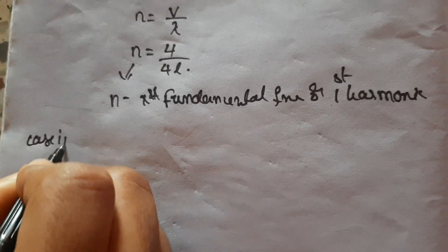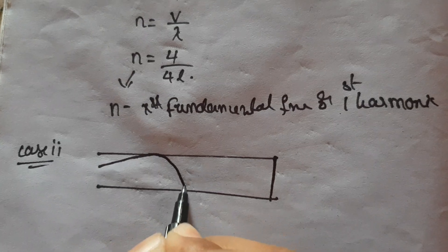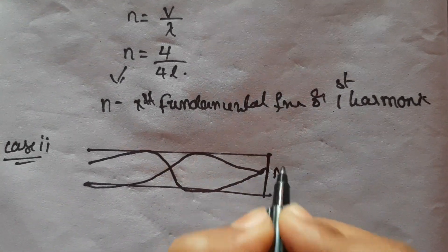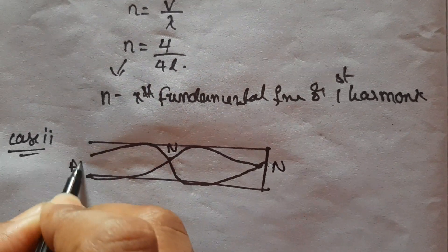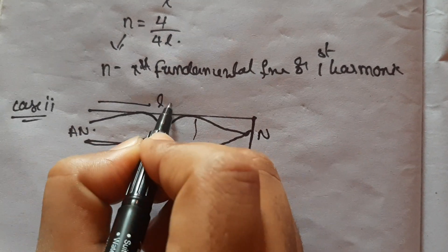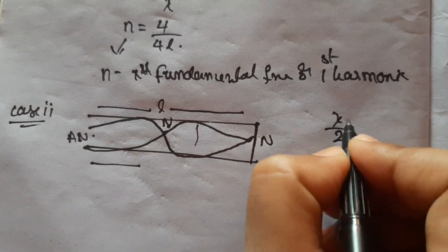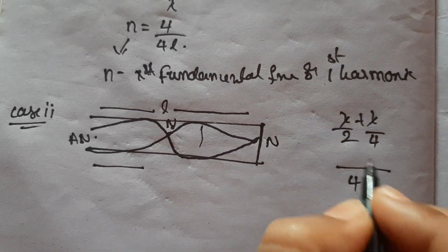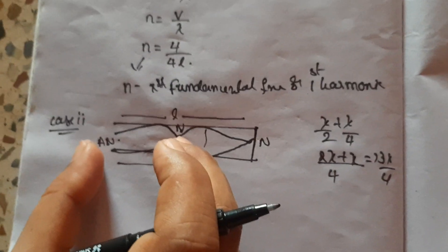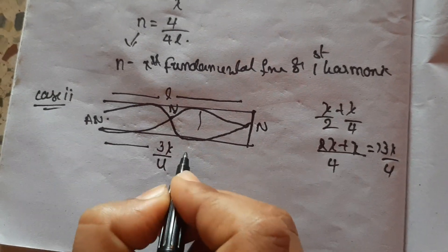Next, Case 2. This is one loop. We have a node and an anti-node — so there are two nodes and two anti-nodes. The length L of the air column: the distance between node and anti-node is lambda by 4, and between anti-node and node is lambda by 2. Adding them gives 3 lambda by 4.